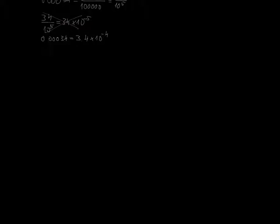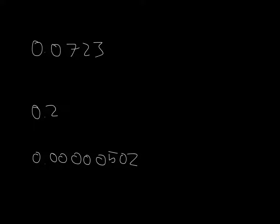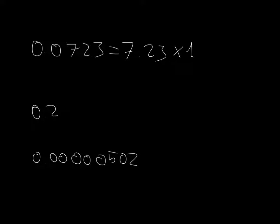Let's do a couple of examples just to make sure we got this. For example, I get 0.0723, or I get 0.2. For 0.0723, I need to stop after the first number — that's 2 places — so it's going to be 7.23 times 10 to the minus 2, because I always need to start with the first number that's not zero. And for 0.2, of course, it's just 2 — I move the comma once, so 10 to the minus 1.